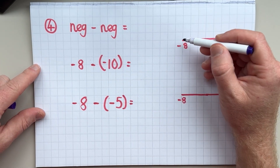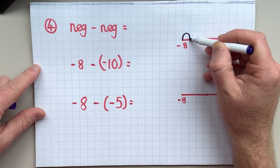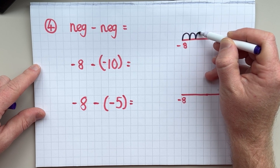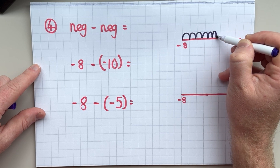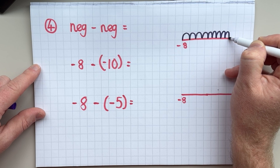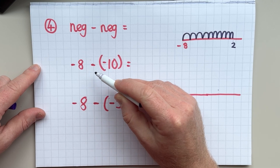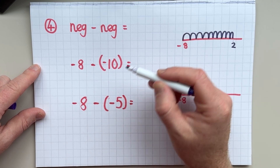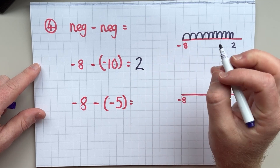So if I start on negative eight, I'm going to actually add ten: negative seven, negative six, negative five, negative four, negative three, negative two, negative one, zero, plus one, plus two. So negative eight take away negative ten actually gives us an answer of positive two.